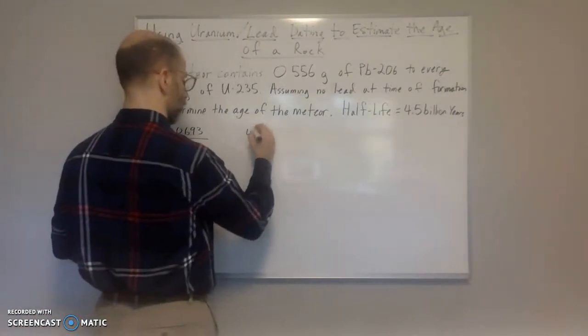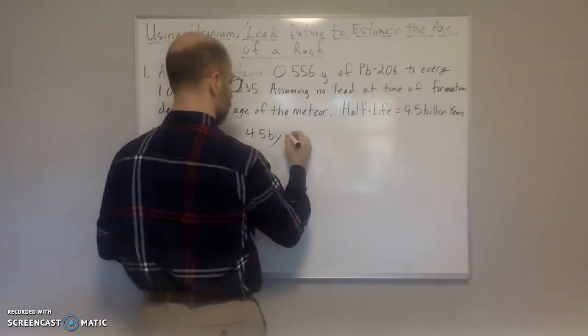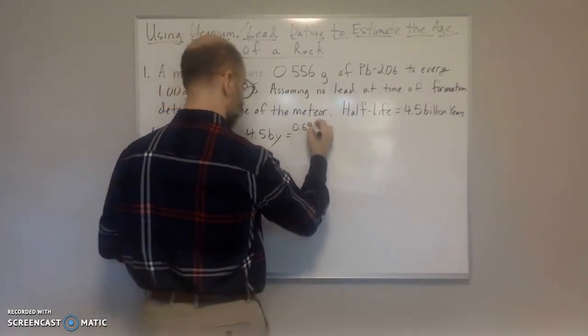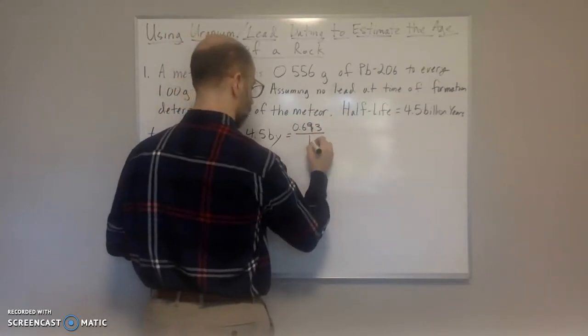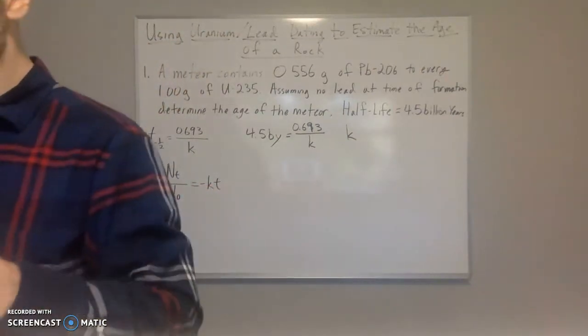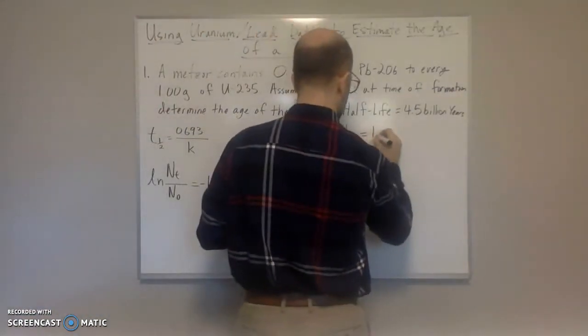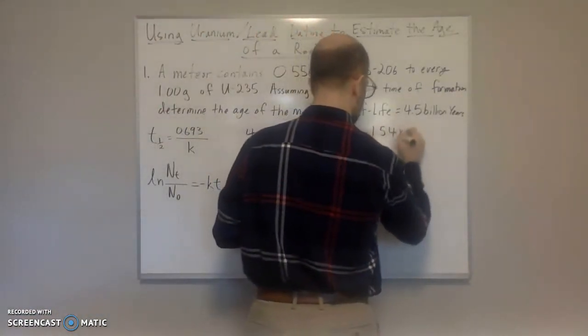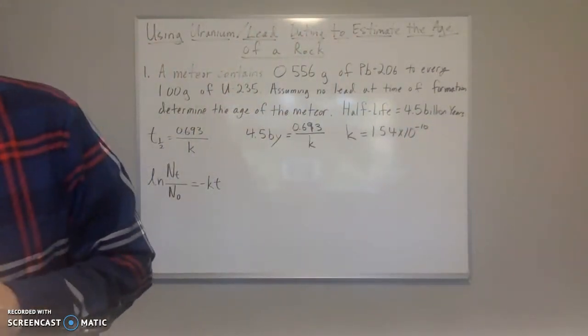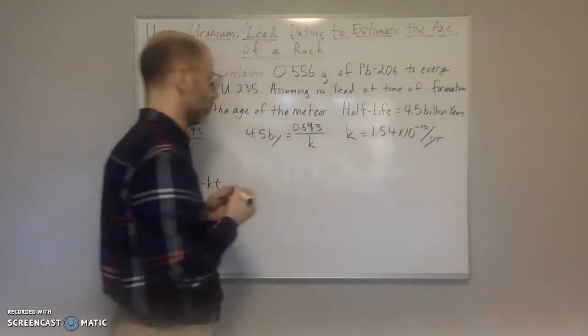So let's do that. We have 4.5 billion years. That's going to be equal to 0.693 over k. Solve for k.